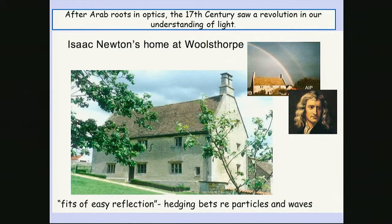I'm going to go right back to the start of Newton and our understanding of light. I'd like to say that Newton hedged his bets on the nature of light. He had this almost unintelligible phrase — 'bits of easy reflection' — which combined a kind of corpuscular view and a wave view of light. An awful lot of what we understand of light stems from early work by Al-Haytham and others within the Arab world.